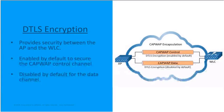Next is DTLS encryption, the Datagram Transport Layer Security encryption. DTLS is a protocol that provides security between the access point and the wireless LAN controller. This allows them to communicate using encryption, and it prevents eavesdropping or tampering from man-in-the-middle attacks.